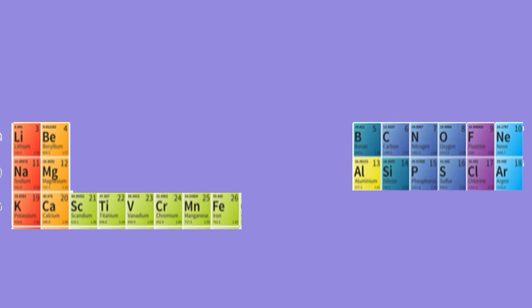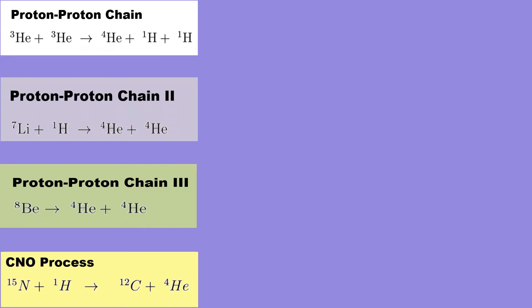Stellar nucleosynthesis creates elements after helium and up to iron. Now, by looking back at the chemical reactions earlier, we now have the proton-proton chain producing helium. We also have the proton-proton chain number 2 and 3 also producing helium. And finally, the CNO process, which leaves us with carbon and helium.